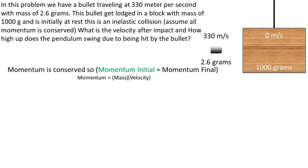For the first step of this problem, we want to find the velocity of the block and bullet after impact. We can use the conservation of momentum, which states that the initial momentum is equal to the final momentum, momentum being mass times the velocity.